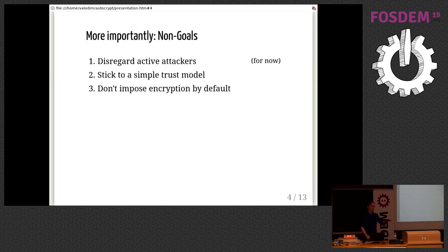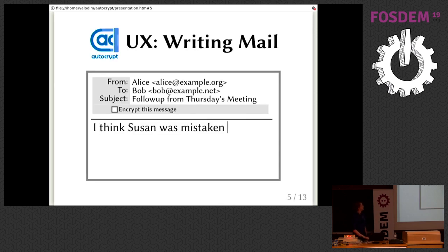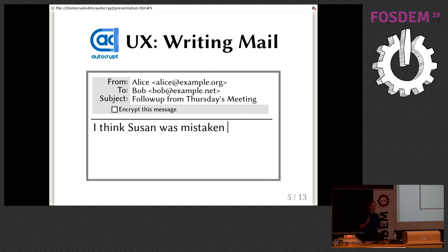Let's establish a baseline of what we envision the UI to look like in the email client. We want pretty much nothing else. If the mail client is capable of encrypting a message, it should be a checkbox and the user can check it. In some circumstances it will be checked by default, but that's not the baseline of where we want to start.